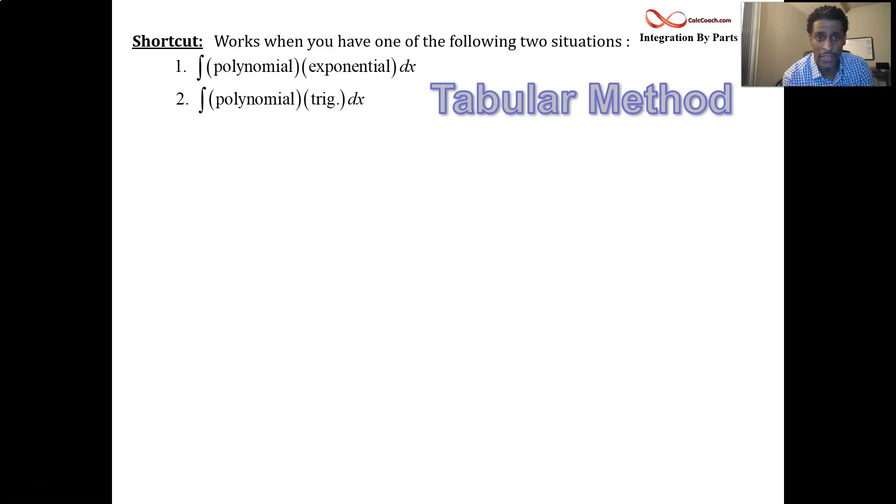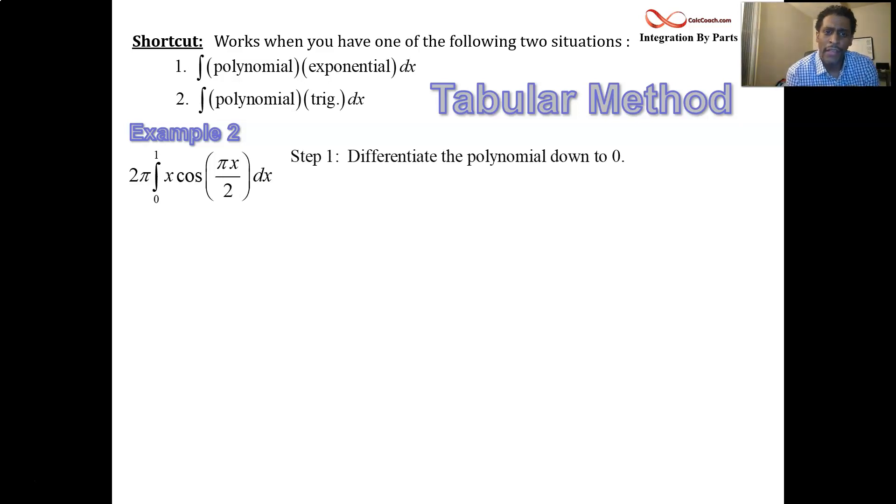Let me give you the exact steps while we apply them to a particular problem. We'll call this example number two. It actually comes from a volume question. What we can execute this integral is the product of 2π times x times the cosine of π over 2x. Step number one in this method, the polynomial part, differentiate that down to zero. That's what you can do with polynomials each time you go down by one in exponent. We take the derivative of x, and we get one. And then the derivative of one, we get zero.